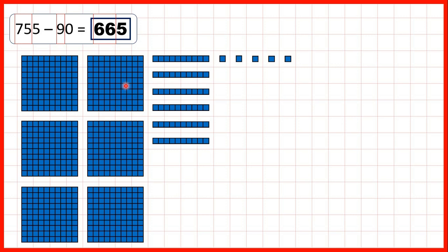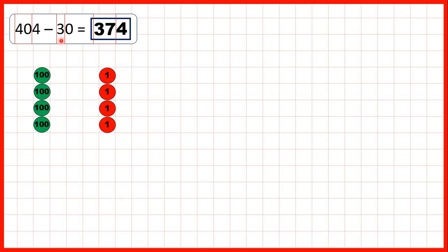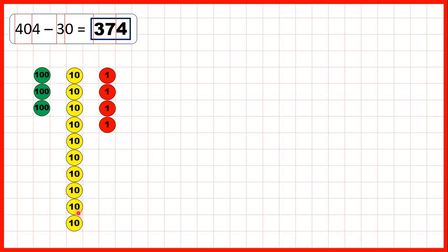We've used base-10 blocks to model the subtraction, but we can also use place value counters. Let's look at 404 minus 30. We start with four hundreds, no tens, and four ones. We need to take three tens away, so we exchange one of our hundreds for ten tens — because ten tens has the same value as 100. Then we take three of those tens away to leave three hundreds and seven tens, and our ones stays the same.